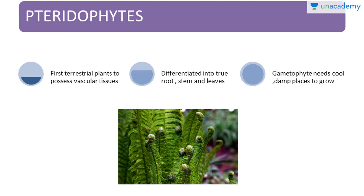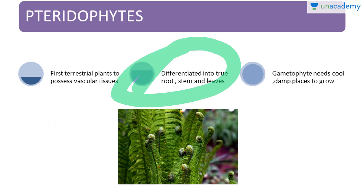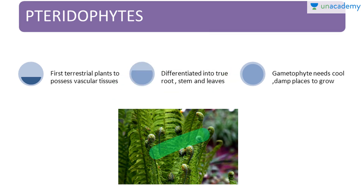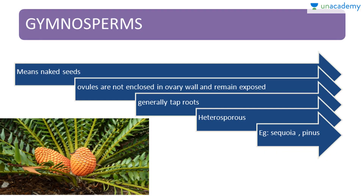Next are the pteridophytes. These are considered to be the first terrestrial plants to possess vascular tissues, differentiated into true stem, leaves, and roots. The gametophyte needs cool and damp places to grow.